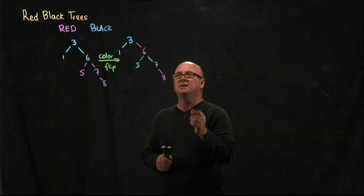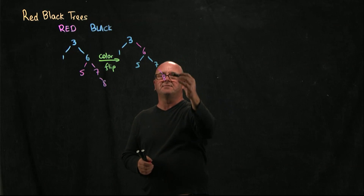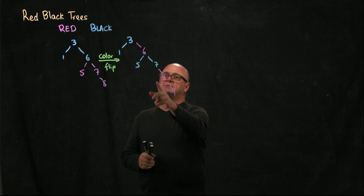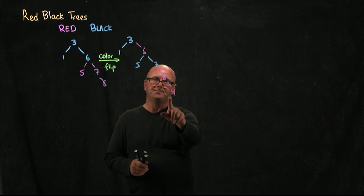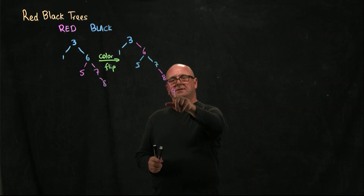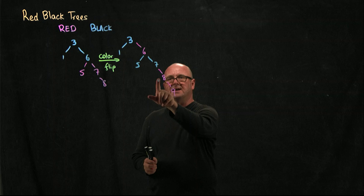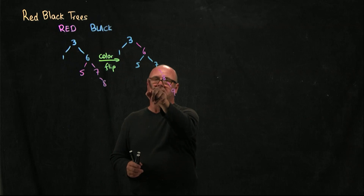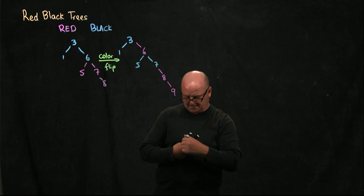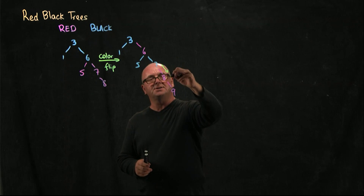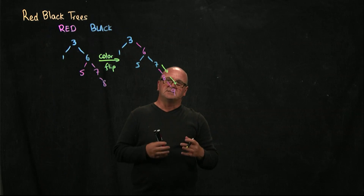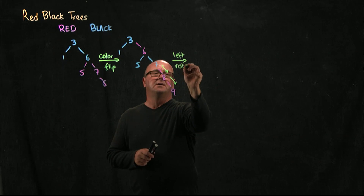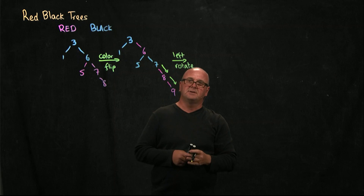Next we add a 9 to our tree. 9 is bigger than 3, bigger than 6, bigger than 7, bigger than 8, so 9 will come down here. We've got a violation because we've got two consecutive red nodes. The 9's parent is the 8, the 8's parent is the 7 — that's the grandparent of the 9 — and the aunt is a null. Black aunt, so we rotate. Our violation is in the right child's right subtree, so we need to do a left rotation. We're going to left rotate the 7 around the 8.